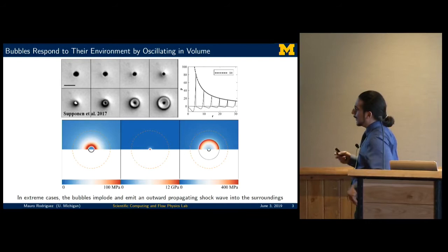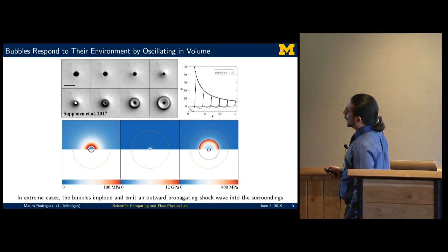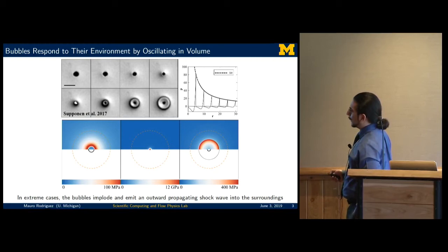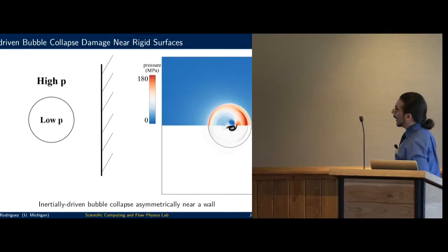When these bubbles collapse, they can happen in very extreme cases. They implode and emit what's called an outward propagating shock wave, as shown here from experiments from Supponen et al. What we know about the shock wave is that when it propagates out radially, the pressure will decrease as 1 over r, where r is the radial direction away from the bubble's epicenter. We can actually capture this phenomena in our simulations when conducting full 3D simulations.